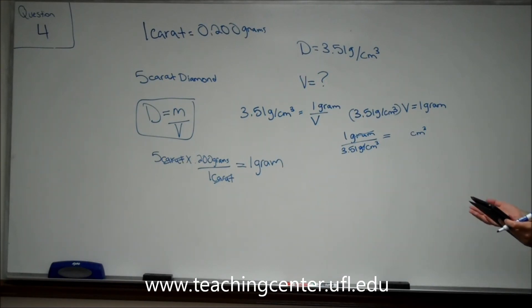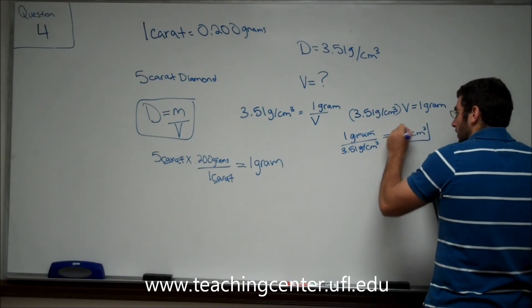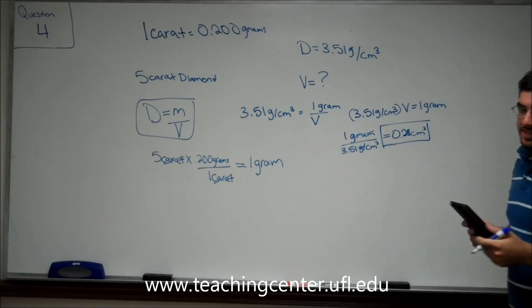So, when you do 1 divided by 3.51, it gives us an answer of 0.28 cubic centimeters.